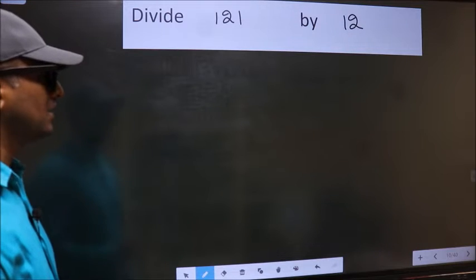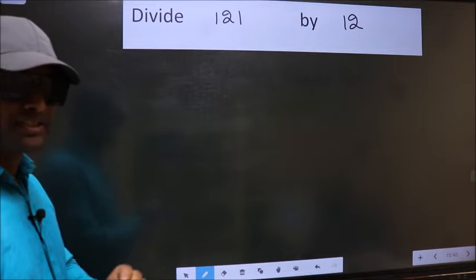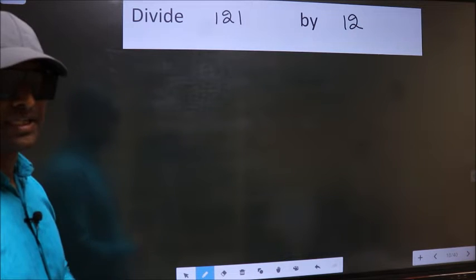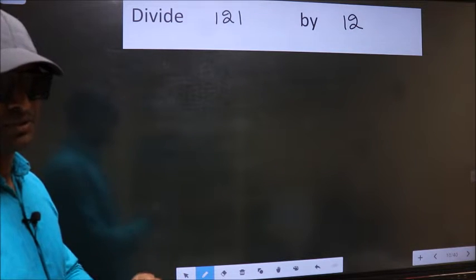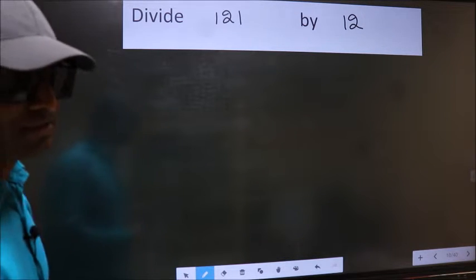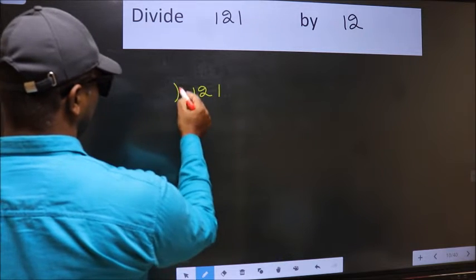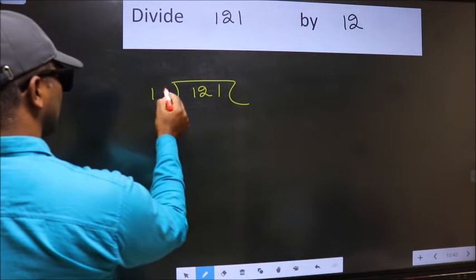Divide 121 by 12. While doing this division, many do this mistake. What is the mistake that they do? I will let you know, but before that we should frame it in this way: 121 divided by 12.